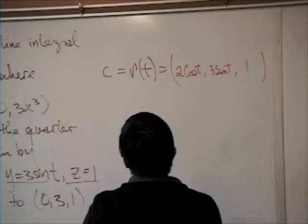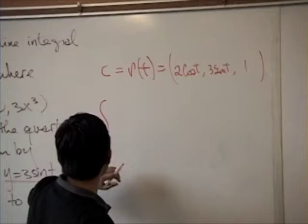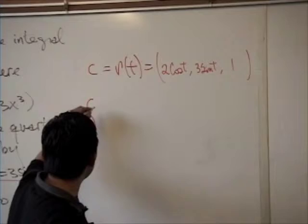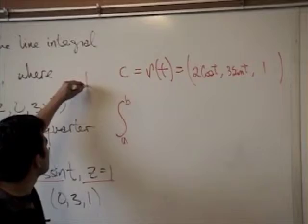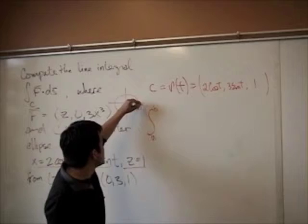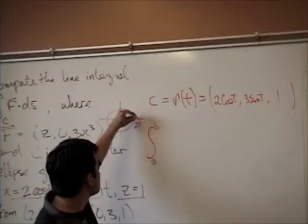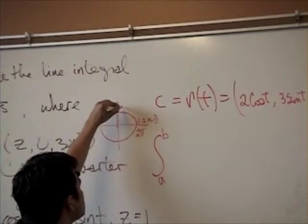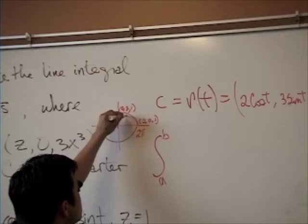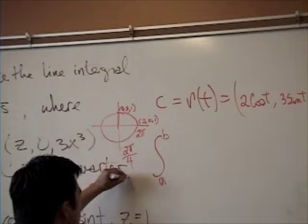When you have that, you can convert that integral into the integral from a to b. But because they said it's a quarter of an ellipse, you know that a whole circle goes from zero to two pi, and if they're only using this part of the circle from (2, 0, 1) to (0, 3, 1), because it's only the quarter of a circle, you divide two pi by four and that's going to give you pi divided by two. That's going to be the interval of your integral.